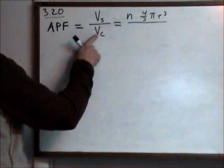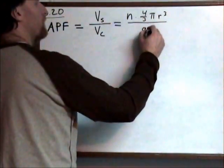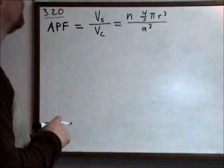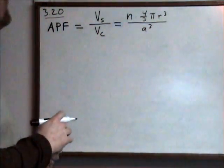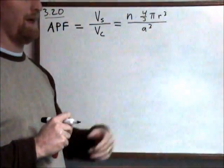The cell is cubic, so that means we simply have one side of the cell cubed. Now what remains is to have a relationship between A and R.